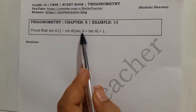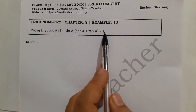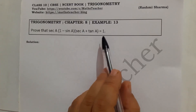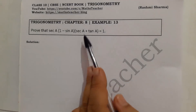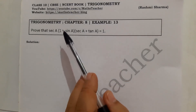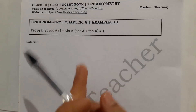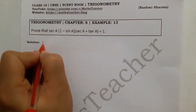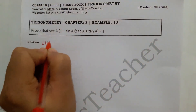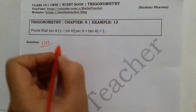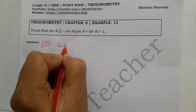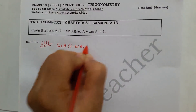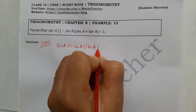So we have multiple relations in these three terms and we have to make it equal to 1. When you have such questions, you can take one side and prove it. Here we have 1 on the right hand side, so we will take the left hand side and solve. LHS is sec a into (1 minus sin a) into (sec a plus tan a).